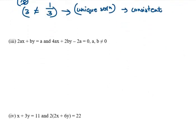In the third part, we have a1 as 2a, a2 as 4a, b1 as b, b2 as 2b, and c1 is -a, c2 is -2a. It is not a, it is actually -a. Why? Because we need to bring this a to the left-hand side, so it will be -a over -2a.